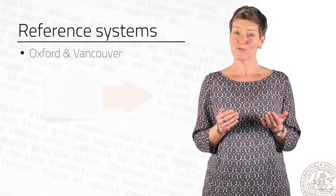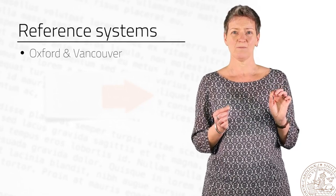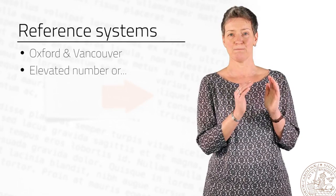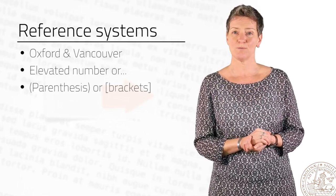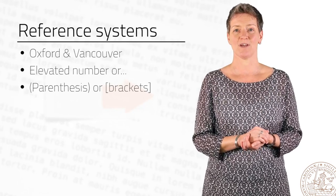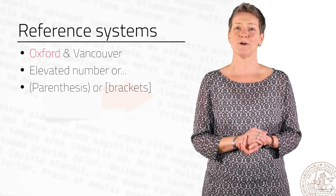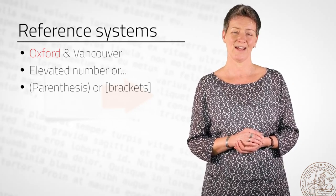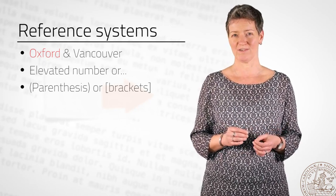Now, the Oxford and Vancouver systems are based on notes. This means that a reference in the text is given as an elevated number, or a number in parentheses or brackets, that is explained on the bottom of the page or in the end of the chapter or text. The Oxford reference system was developed by Horace Hart, who worked for Oxford University Press in the late 1800s. This is probably why most printers and publishers choose this system.